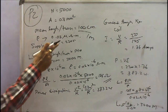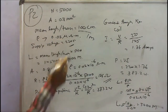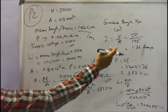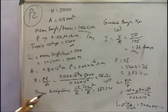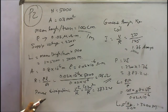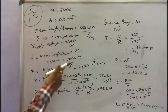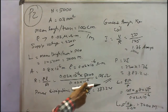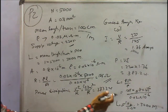Supply voltage is 220 V and resistance is 125 ohms, so current I = 220 / 125 = 1.76 amps. For power dissipation, using P = V² / R: 220² / 125 = 387.2 watts.